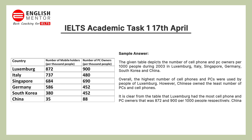Now I will explain how you can write this task. The introduction should be: the given table depicts the number of cell phone and PC owners per thousand people during 2003 in Luxembourg, Italy, Singapore, Germany, South Korea, and China.